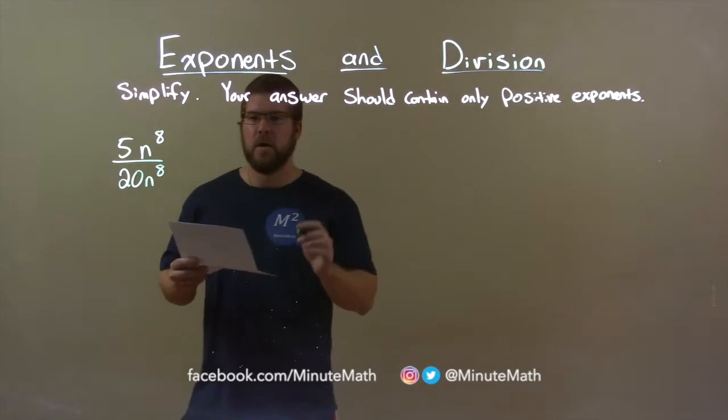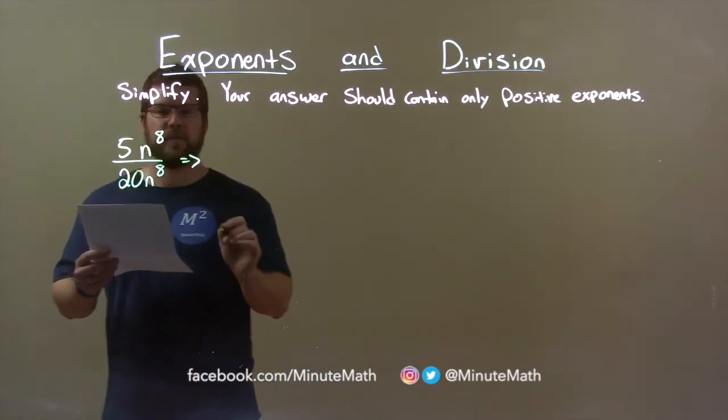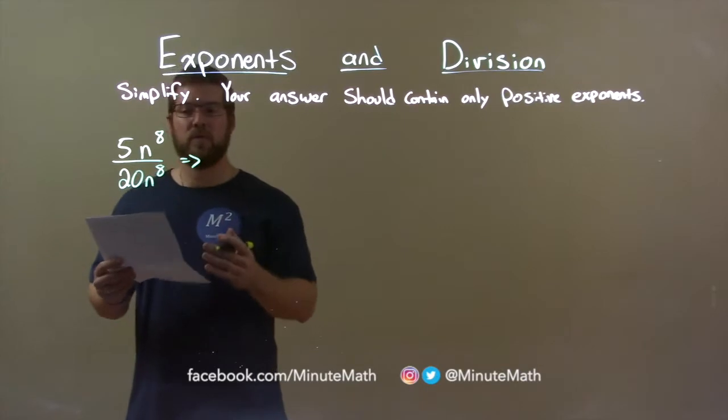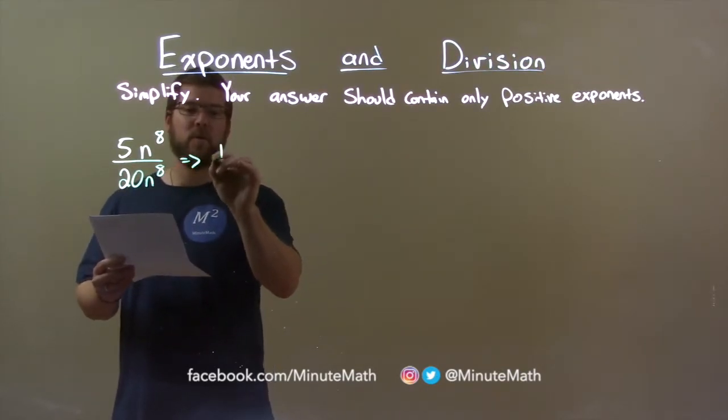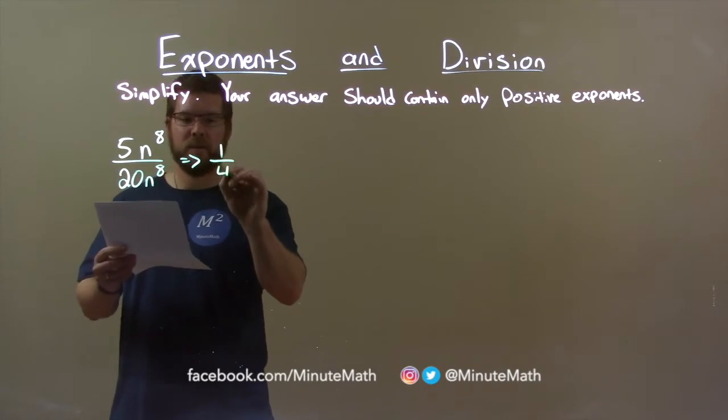Alright, first thing, let's look at the coefficients here. 5 divided by 20. Both of those numbers are divisible by 5. 5 divided by 5 is 1, and 20 divided by 5 is 4.